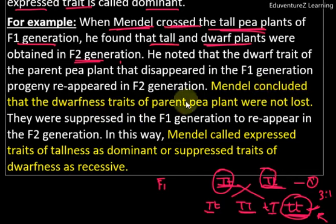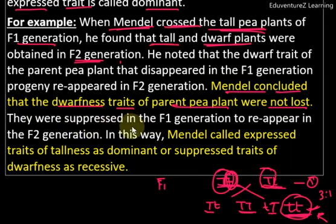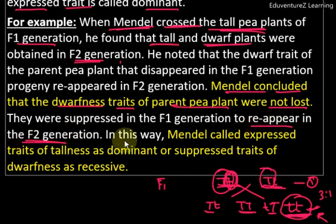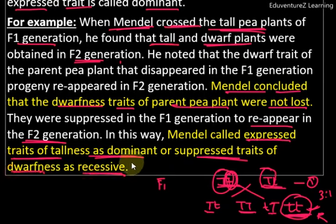Mendel concluded that the dwarfness trait of the parent pea plant was not lost — it reappeared in the second generation. They were suppressed in the F1 generation to reappear in the F2 generation. Mendel called the expressed trait of tallness as dominant, and the suppressed trait of dwarfness as recessive. Recessive traits don't openly appear everywhere, but that doesn't mean they are lost — they are available somewhere, they are definitely present.